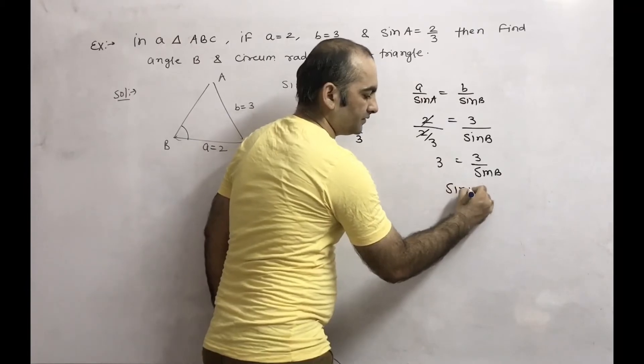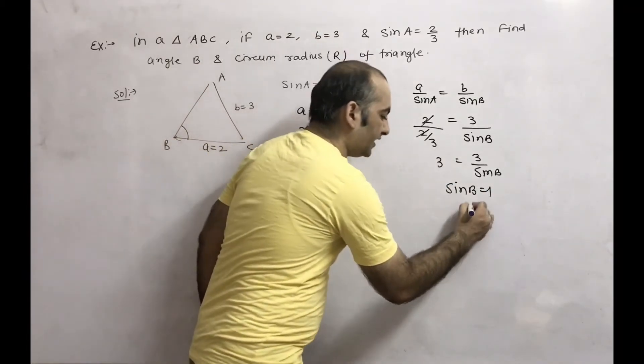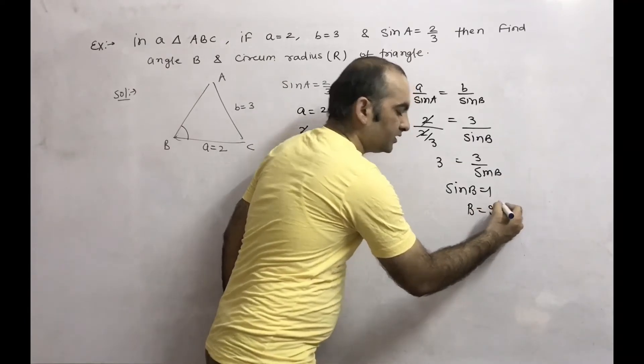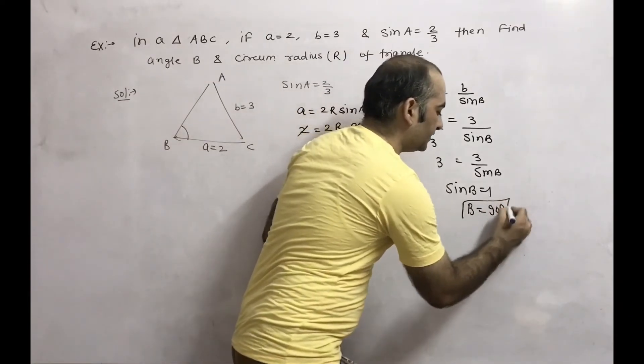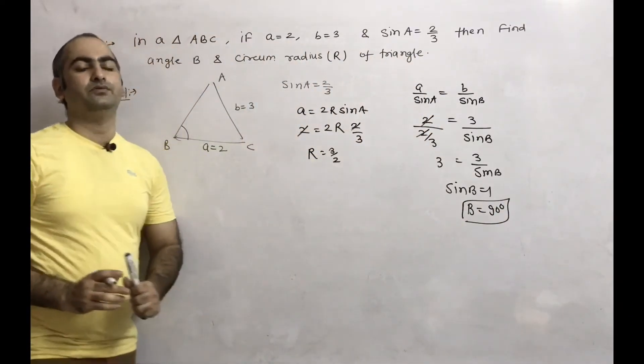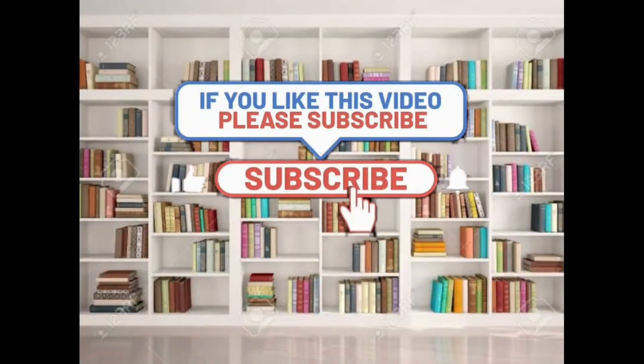Sine B equals 1. If sine B is 1, then B will be 90 degrees, because A and B are angles of a triangle. So angle B is 90 degrees. By using sine rule we can solve this problem. Thank you.